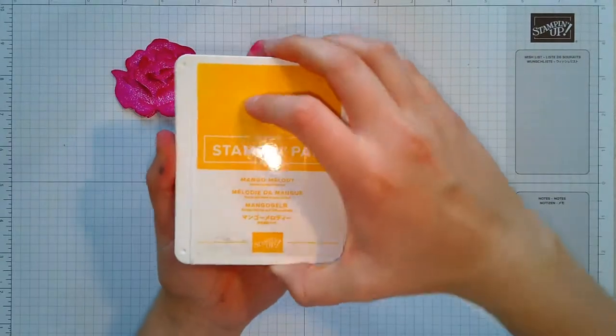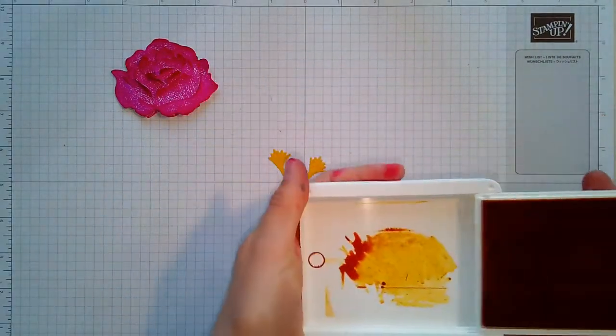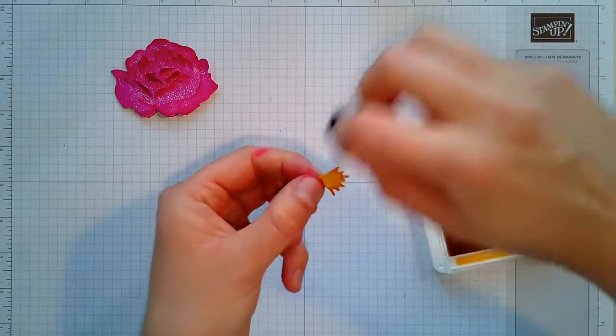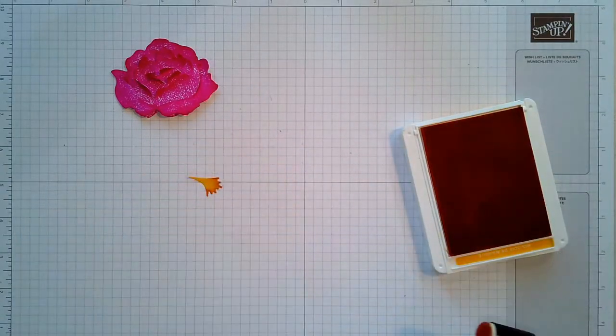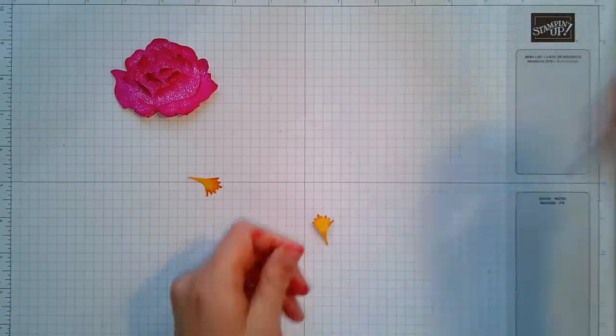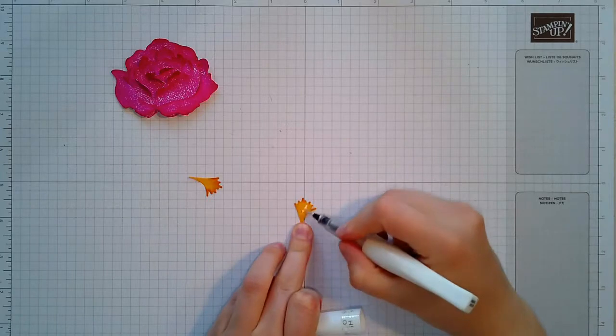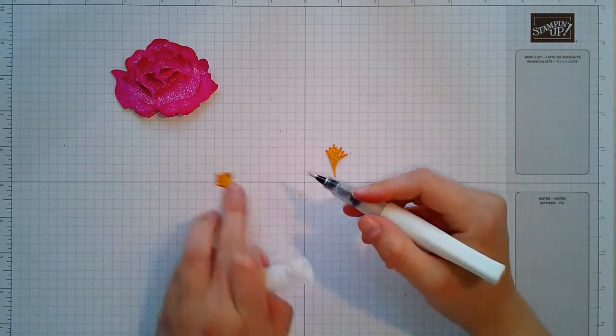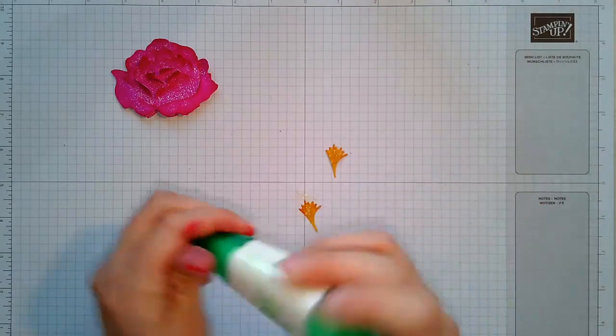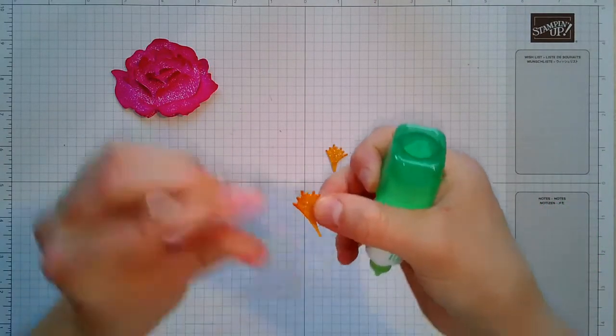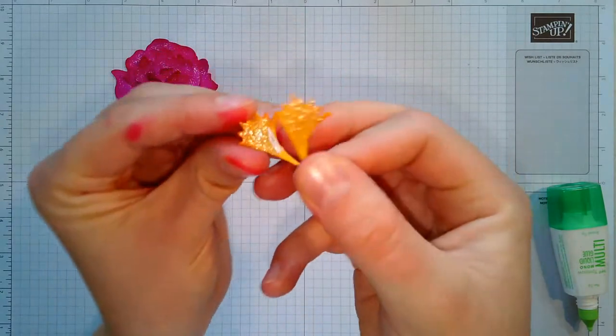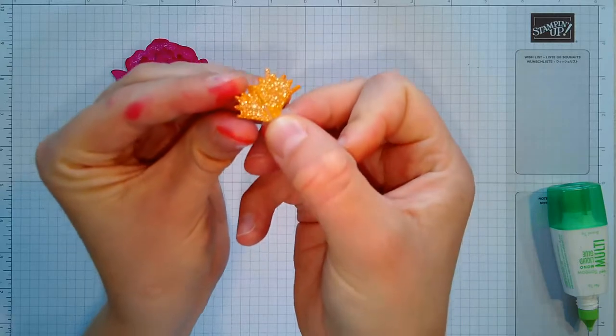Now I took Mango Melody ink, which is a little bit darker because I want there to be some contrast. And I took a sponge dauber here and I just kind of sponged this like so. You can see there's some contrast there. Take the second one, do the exact same thing, like so. And then take your Wink of Stella and just paint right over the top of that to add some shimmer. It doesn't have to be exact there. Now we can take a little bit of Tombow glue and take the first one of these. And I'm going to put a little glue here. Take the second one, and then I just kind of overlap them like so.